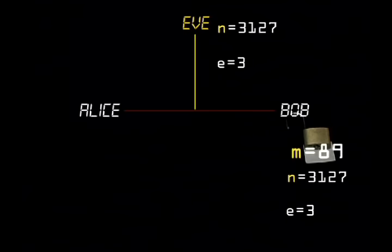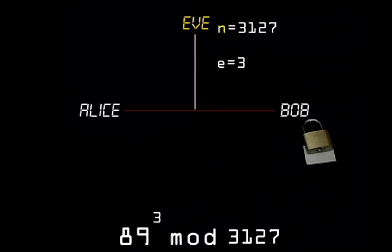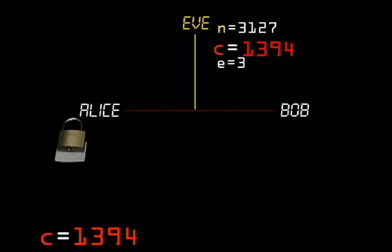Bob locks his message by calculating m to the power of e mod n. Call this C, his encrypted message, which he sends back to Alice.